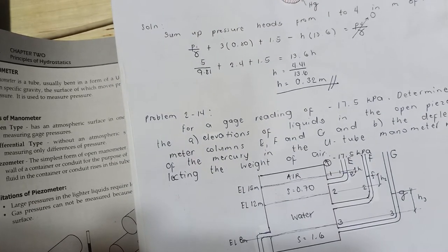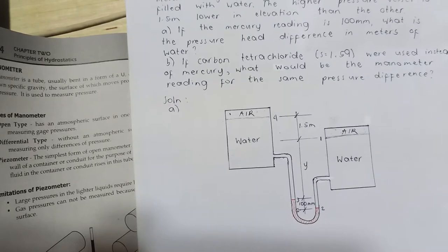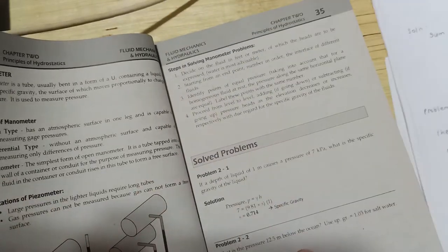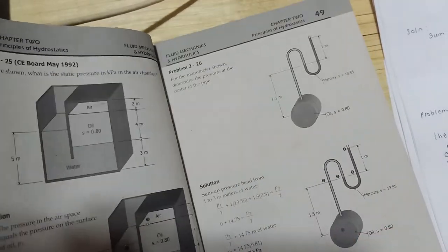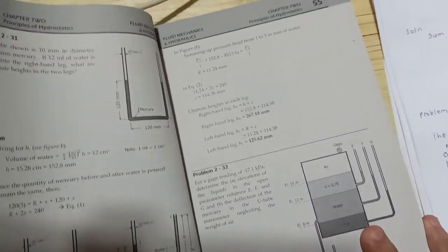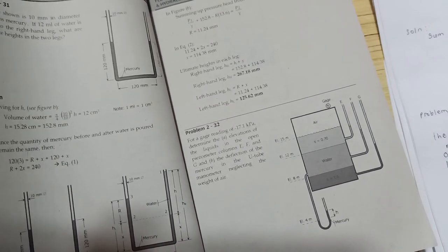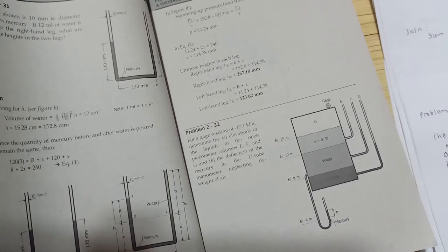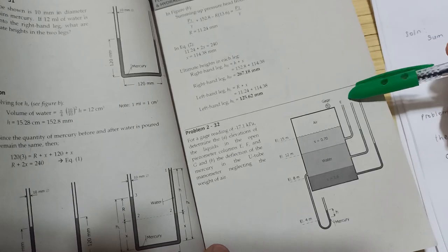Problem 14 is very tricky but satisfying to solve when guided by the steps. At page 55, Problem 2.32: For a gauge reading of negative 17.1 kilopascal, determine the elevations of liquids in the open piezometer columns E, F, and G, and determine the deflection of mercury in the U-tube manometer.